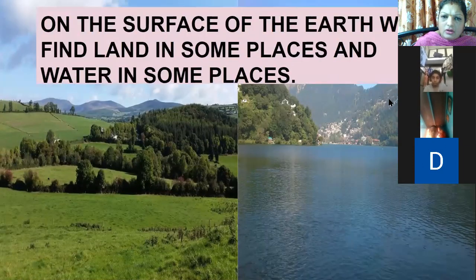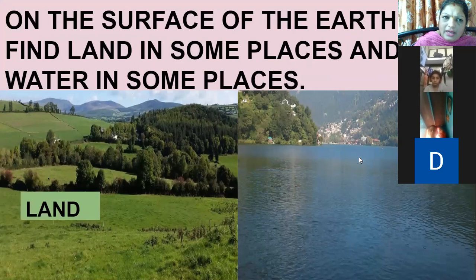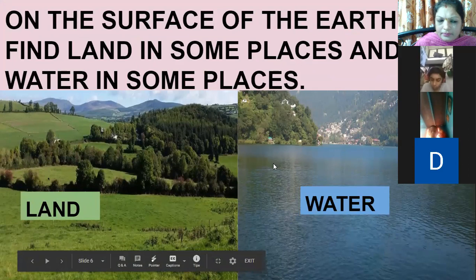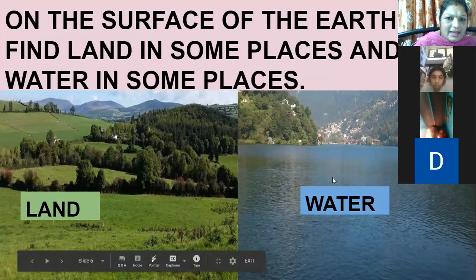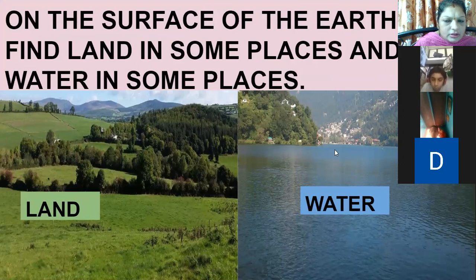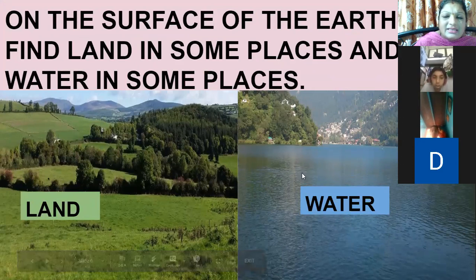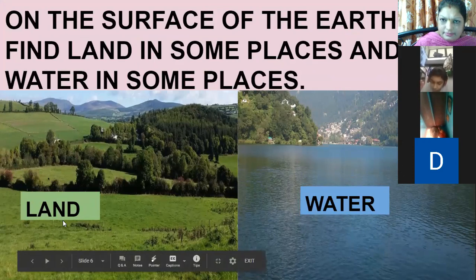As we are living on the earth, we have land and water both available on the earth. But the proportion of water is more as compared to land. On the surface of the earth, we find land in some places and water in some places.